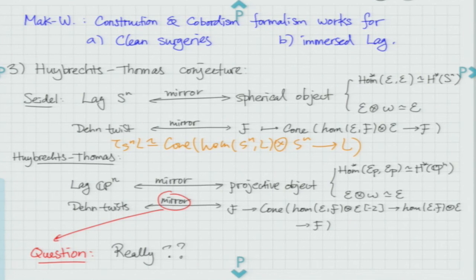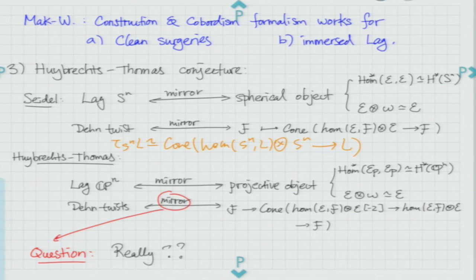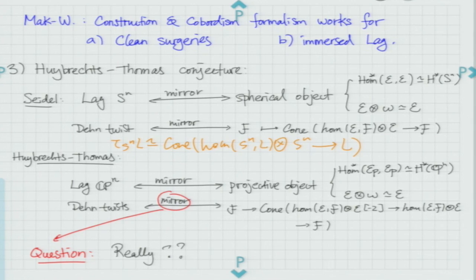In particular, if you put a Lagrangian CP^n, you can define a Dehn twist using the geodesic flow. Huybrechts-Thomas construct a projective object in the derived category. A Lagrangian CP^n is a smooth CP^n embedded into a symplectic manifold as a Lagrangian — similarly for Lagrangian RP^n and HP^n. They construct this projective object on the derived category, and on the B side they also construct and conjecture a formula for the projective twist, which is given by a specific formula. It is an auto-equivalence on the derived category.